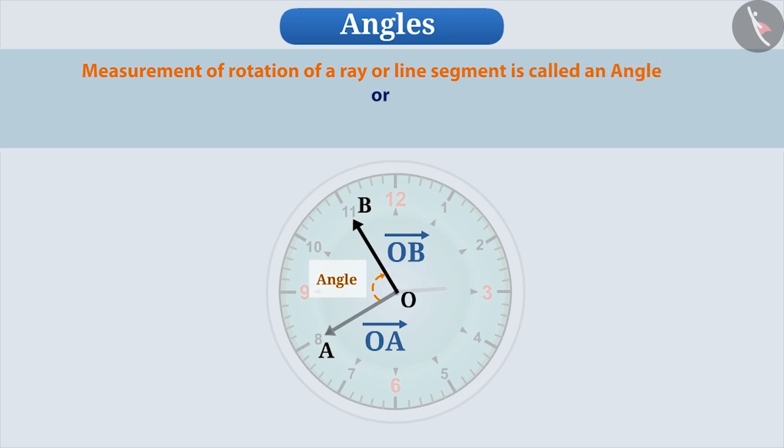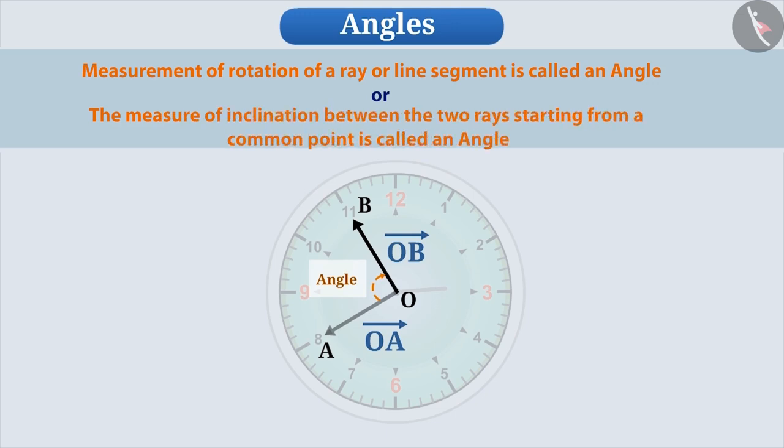Or, we can also say that the measure of inclination between the two rays starting from a common point is called an angle.